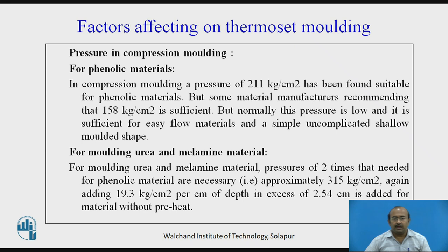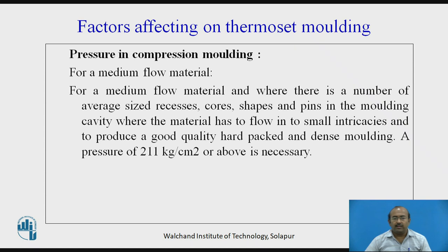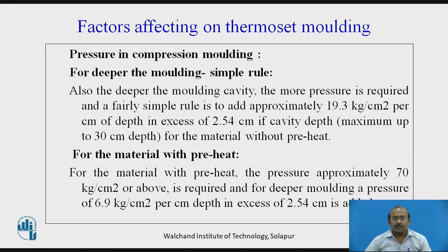For a medium flow material where there are a number of average-size recesses, cores, shapes, and pins in the molding cavity — where the material has to flow into small intricacies to produce a good quality, hard-packed and dense molding — a pressure of 211 kg/cm² or above is necessary. For deeper mold cavities, a simple rule applies: add approximately 19.3 kg/cm² per centimeter of depth in excess of 2.54 cm, for cavity depth up to 30 cm, for material without preheat. For material with preheat, approximately 70 kg/cm² or above is required, and for deeper molding, 6.9 kg/cm² per centimeter depth in excess of 2.5 cm is added.